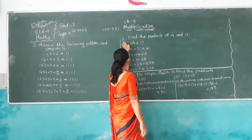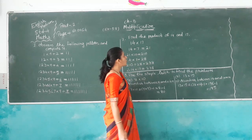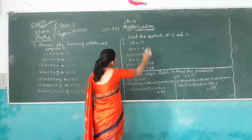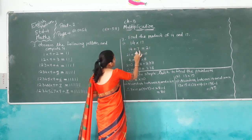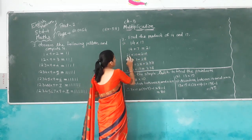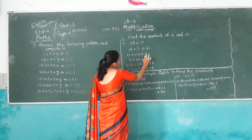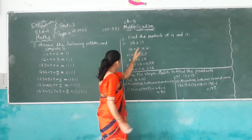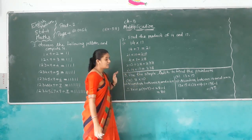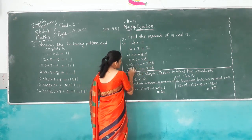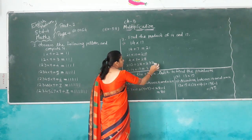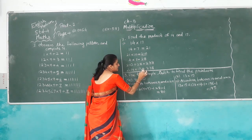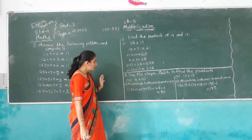Question number 2: Find the product of 14 and 17. So 14 multiplied by 17. First 14 multiplied by 7, we get 98. Then 21 multiplied by 10 — then 4 multiplied by 7 is 28. Then 210 plus 28 is equal to 238. So 14 multiplied by 17 is equal to 238.